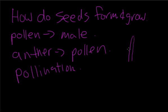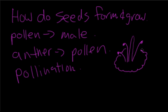This is the pistil, and this little thing is called the anther. The pollen — let's make them yellow — must go from the anther into the pistil.